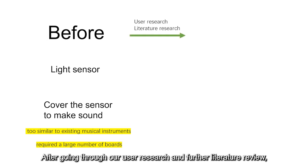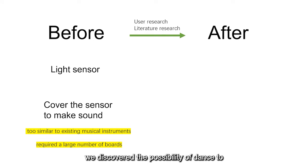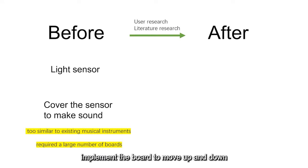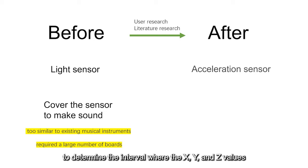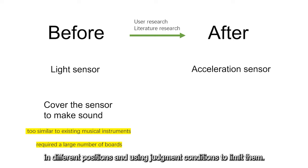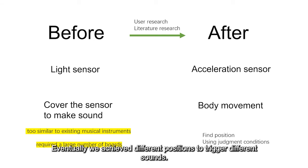After going through our user research and further literature review, we discovered the possibility of dance to generate music, and tried to write code to implement the board moving up, down, and flipping to make different sounds. In the end, we used a three-axis acceleration sensor to determine the interval where the x, y, and z values are located for each position, by observing the human arm in different positions and using judgment conditions to limit them. Eventually, we achieved different positions triggering different sounds.